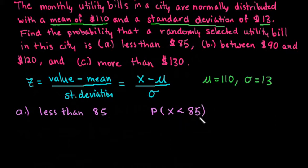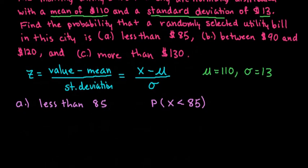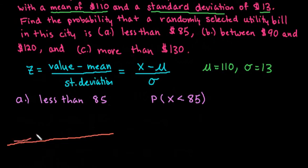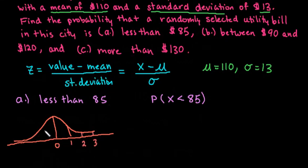We can't find this without technology or without a table value, and to find a table value we have to convert it to a z-score. A z-score tells you, in a standard normal model, how many standard deviations above or below the mean you have. If we draw a rough sketch of the standard normal model, it's always centered at zero, with standard deviations going out 1, 2, 3 to the right and negative 1, negative 2, negative 3 to the left.